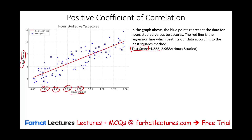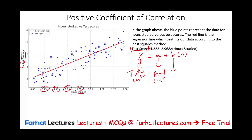We can explain this relationship with the formula: test score = 4.22 + 2.986 × hours studied. You may be familiar with this as y = a + bx, or from a total cost perspective: total cost = fixed cost + (variable component × activity). Here, a = 4.22 is the fixed component (y-intercept), b = 2.986 is the slope of the line, and x is the independent variable — hours studied.